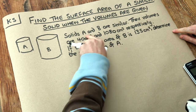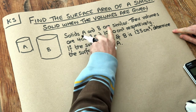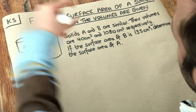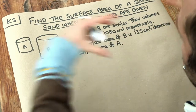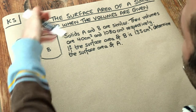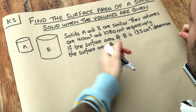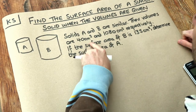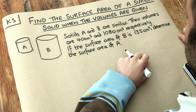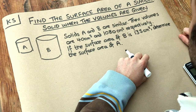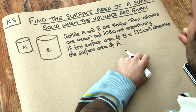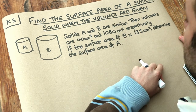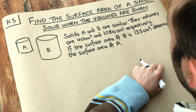So we've got this problem here. Solids A and B are similar. Remember that similar means they're the same shape but just different sizes, so everything scales in the same way — if it's twice the width then it'll be twice the height as well. Their volumes are 40 centimeters cubed and 1080 centimeters cubed respectively. If the surface area of B is 135 centimeters squared, determine the surface area of A.